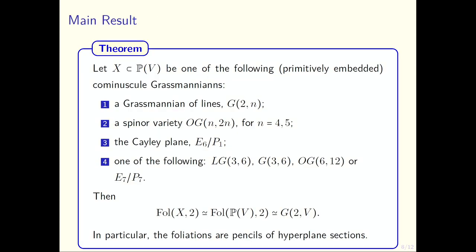The result we managed to prove is that for these cominuscule Grassmannian spaces we could prove that the space of foliations of degree zero is the same, Fol(X,2) ≅ Fol(ℙ(T_X),2). In particular, the space of foliations is a Grassmannian of lines too.